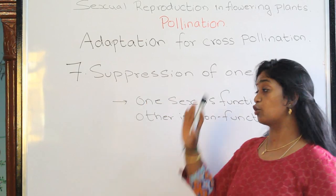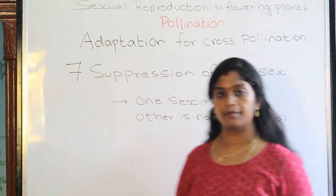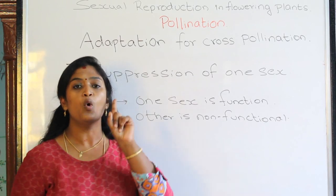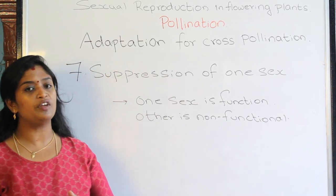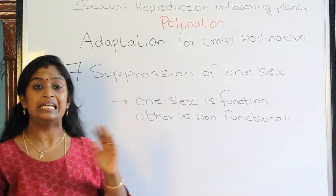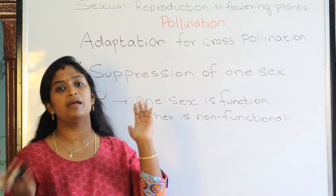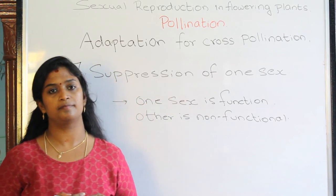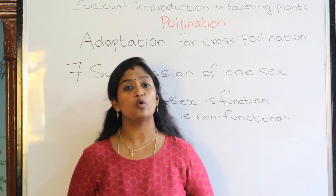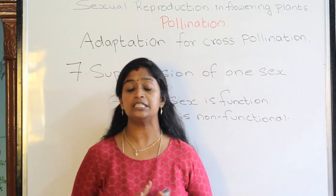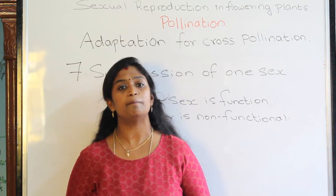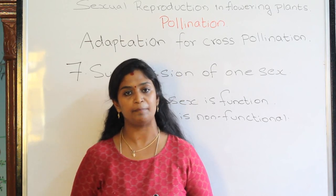The seventh adaptation for cross-pollination is the suppression of one sex. If the plant is bisexual — containing both male and female reproductive units — one unit, either male or female, remains non-functional. In one condition the male matures while the female remains non-functional; in another the female matures while the male is non-functional. In this video we studied seven different adaptations for cross-pollination: dioecy, dichogamy, heterostyly, hercogamy, prepotency, self-incompatibility, and suppression of one sex. In the next video we will study adaptations for different external agencies. Until then, happy learning!